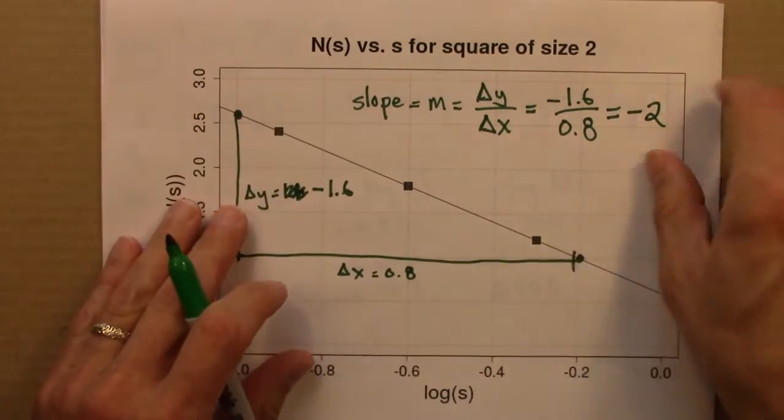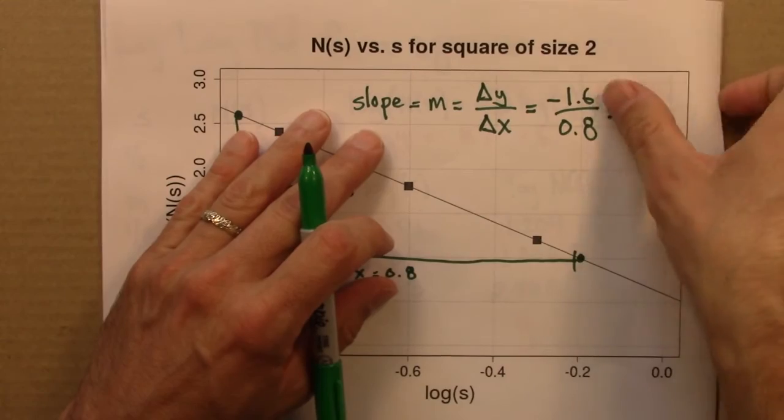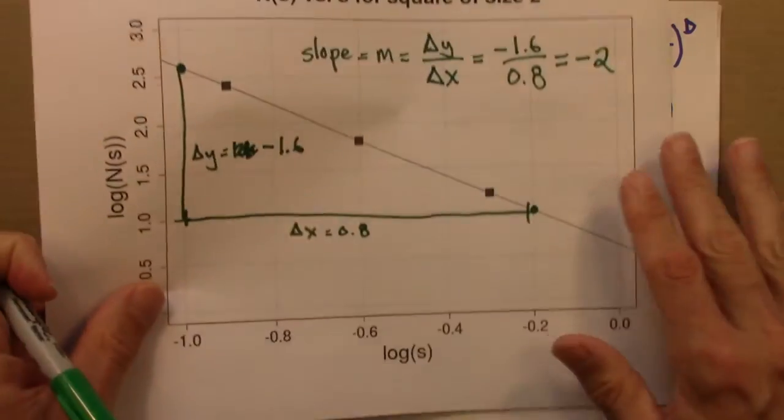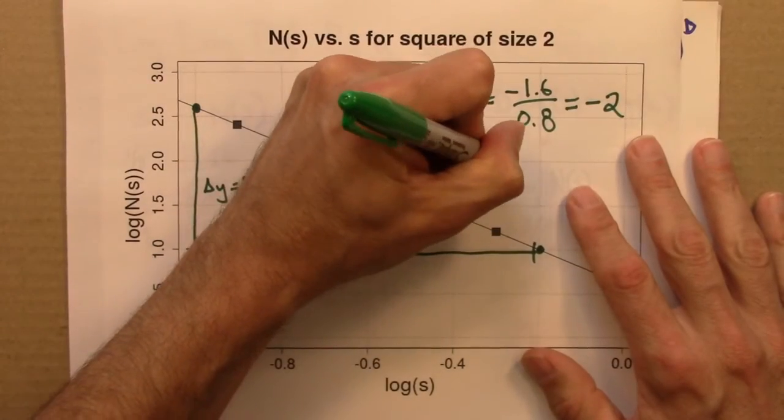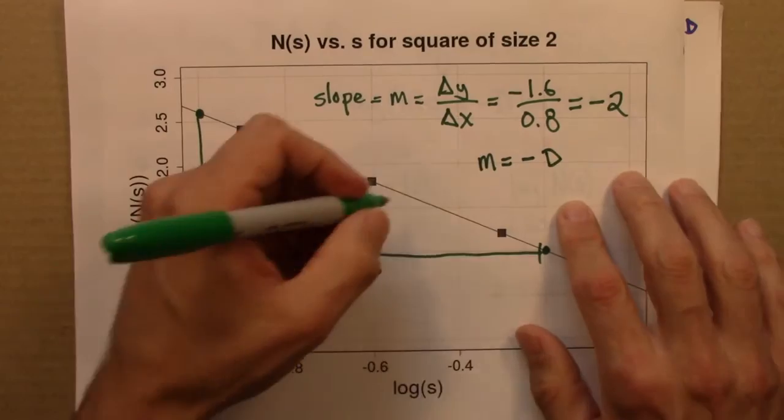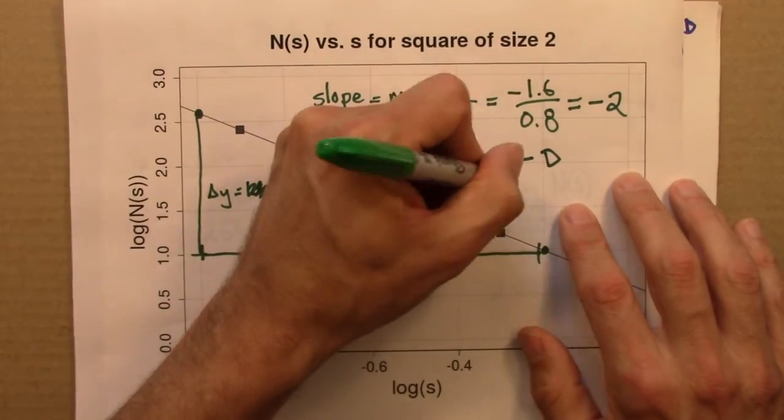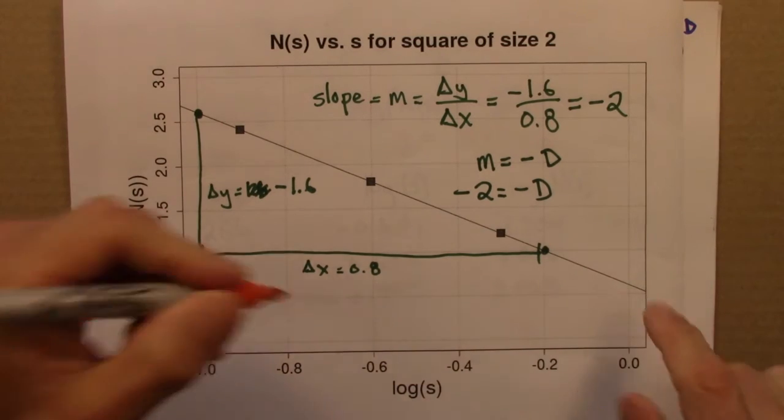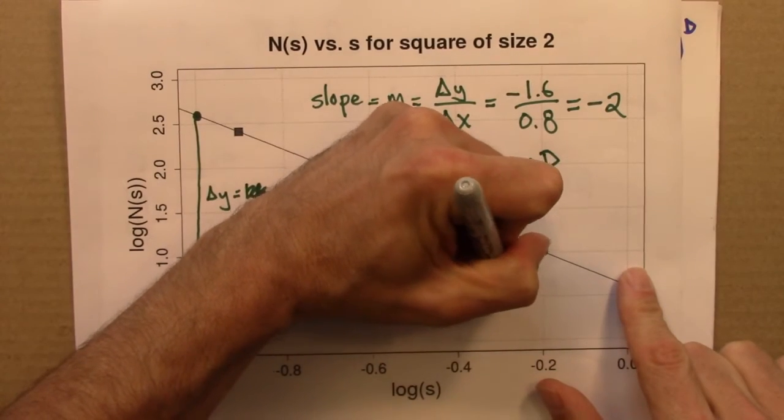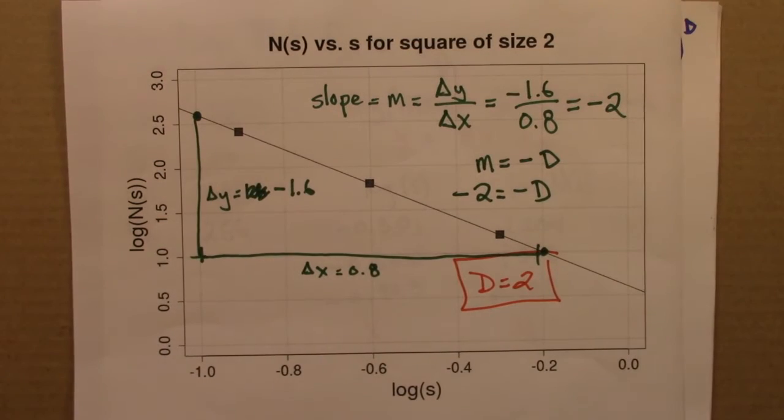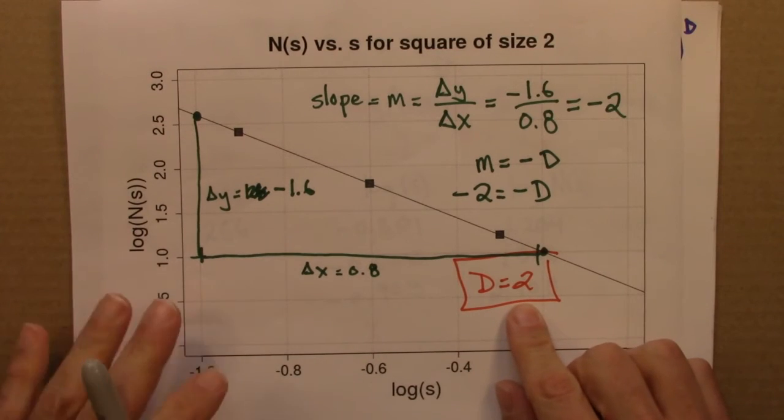So that means we decided that the slope, m, is the same thing as minus d. So m equals minus d. d is the box counting dimension. m was minus 2. So what do we end up with? d equals 2. So, yet again, a lot of work to find out that a square is two dimensional.